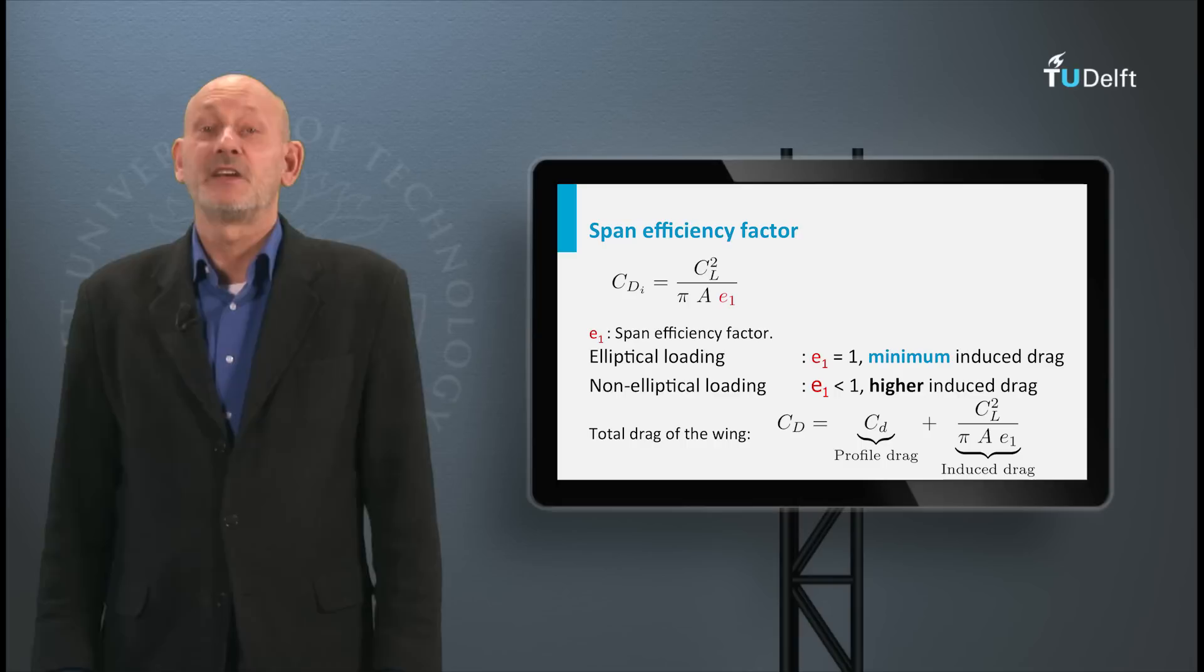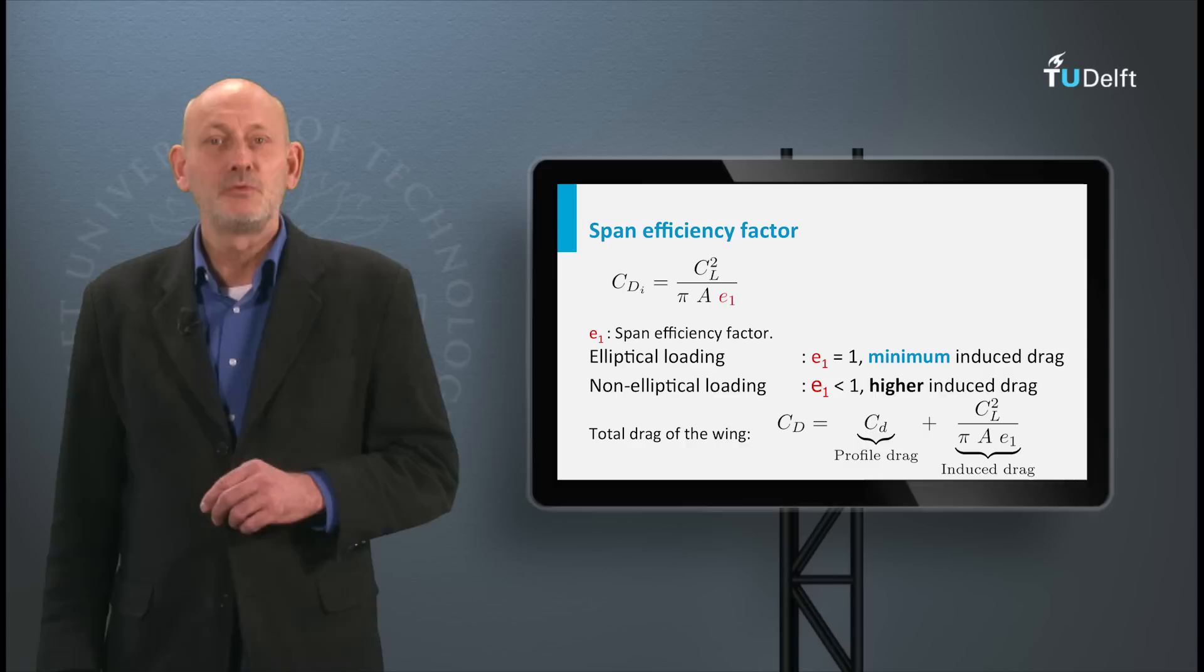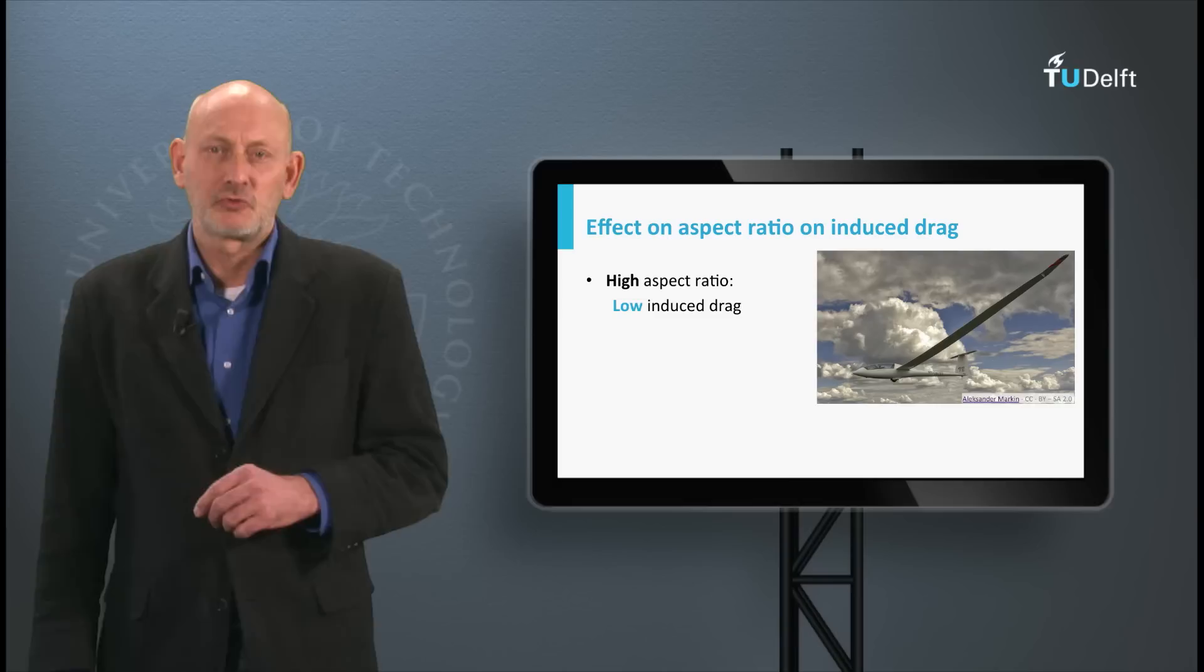The total drag of a wing is given by the profile drag plus the induced drag. Note the capitals D and L for the wing and the small d to denote airfoil properties.